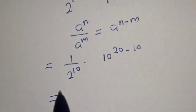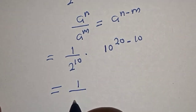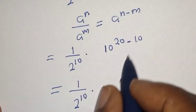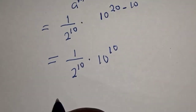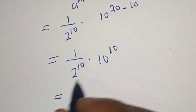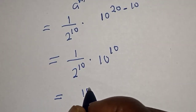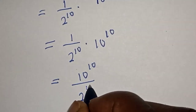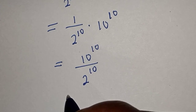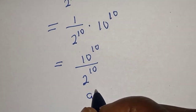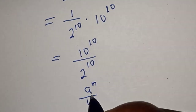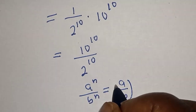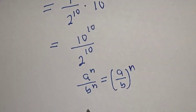So here we have 1 over 2 raised to power 10, multiplied by 10 raised to power 20 minus 10, which is 10. This gives us 10 raised to power 10 over 2 raised to power 10. Now take note of the rule: a raised to power n over b raised to power n is equal to a over b, raised to power n.